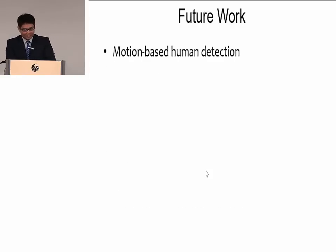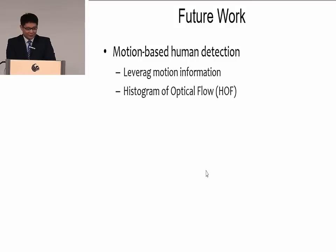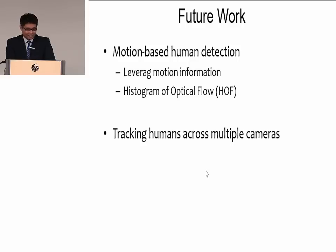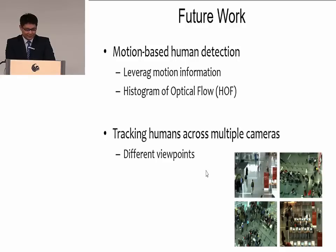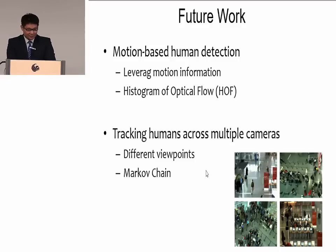There are some future directions to explore. First is motion-based human detection — most detectors use static features, but we can leverage motion features in video, for example histogram of optical flow features, which would help detection. Second, we can track humans across multiple cameras. With a dataset of different viewpoints, we can track a person walking from one scene to another. A possible solution is to use a Markov chain model to model state changes between scenes — for example, if a person exits one scene, we use the Markov chain model to obtain probabilities of entering other scenes. Combined with appearance features, we should be able to track the person.